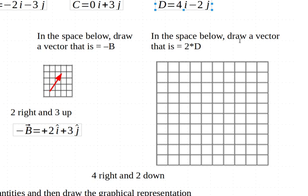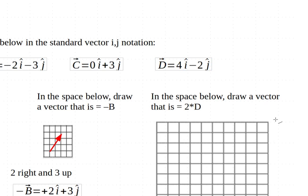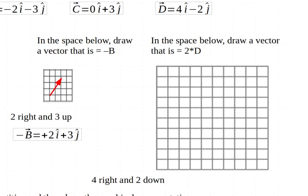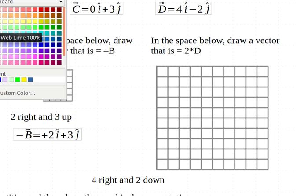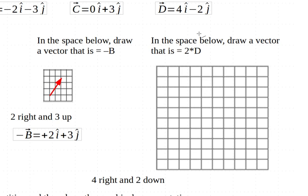So let me think about it in terms of drawing my vectors. So I'm gonna start off here. And I've got a vector which goes 4 to the right, 1, 2, 3, 4, and 2 downwards. And again, I'll just make that a little bolder so it's easier to see. That's vector D.